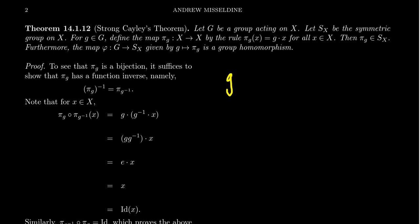That is to say, we identify g with the function λ_g, which goes from G to G, defined by λ_g(x) = gx, left multiplication. So we can identify group elements with permutations. I want to now point out that this identification — a group element with its left multiplication — is just the left regular action of the group onto itself. What we're doing is associating a group with its left regular action, which is a permutation action, which connects you to a permutation group.